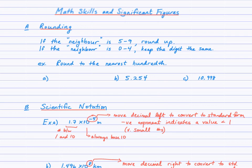In terms of rounding, we're going to follow the very simple rule that if the neighbor is 5 to 9, we'll round up, and if the neighbor is 0 to 4, we'll keep the digit the same. There is a way to round when the neighbor is exactly 5, where you follow an even-odd rule, but I'll leave that for a higher level course. We'll follow the simple rule: if the neighbor is 5 to 9, we round up.